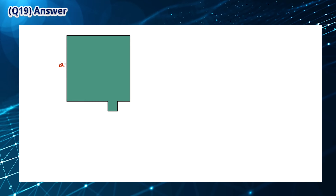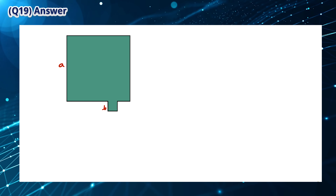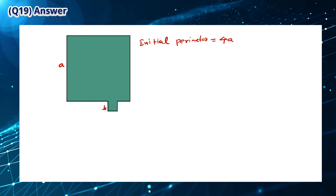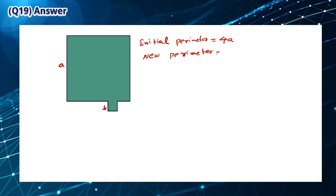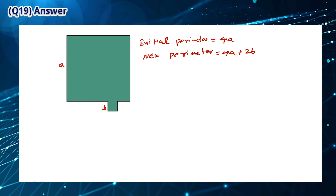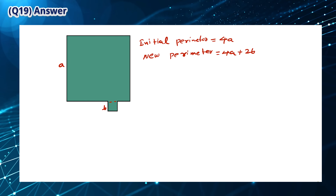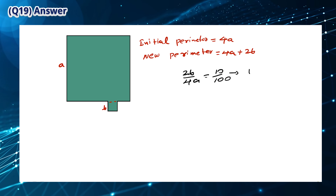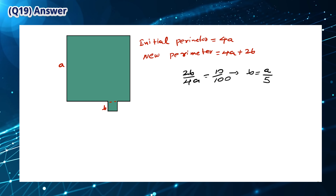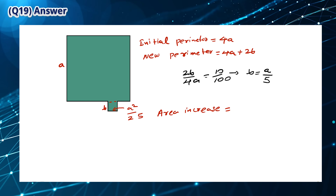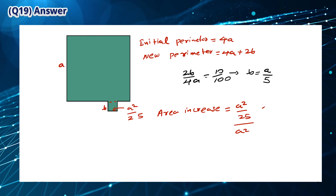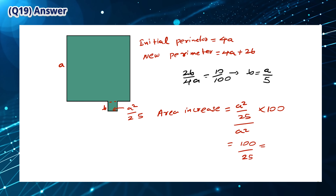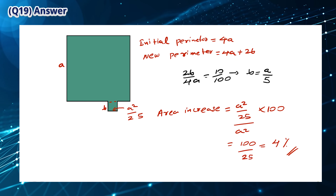Let A be one side of the larger square and B be one side of the smaller square. The initial perimeter is 4A and the new perimeter is 4A plus 2B. Since the increase is 10%, we get 2B over 4A equals 10 over 100, and solve to find B equals 4A/5. The increase in area is B² over A² multiplied by 100, which gives 4%. The answer is B.